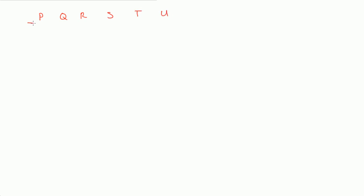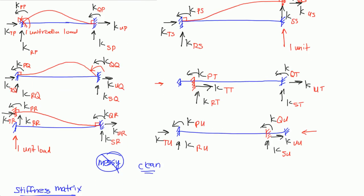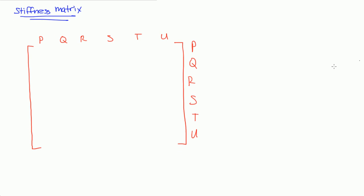The columns at the top are labeled P, Q, R, S, T, U, and the rows on the side are also labeled P, Q, R, S, T, U. I'm going to write all those K values, and the subscripts on these K values correspond to the row and the column.